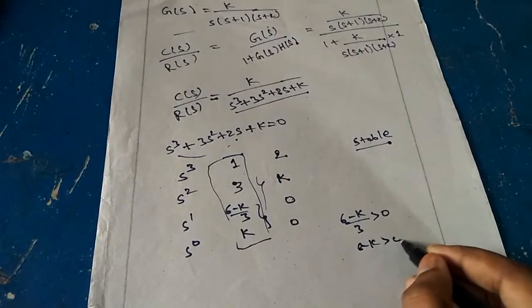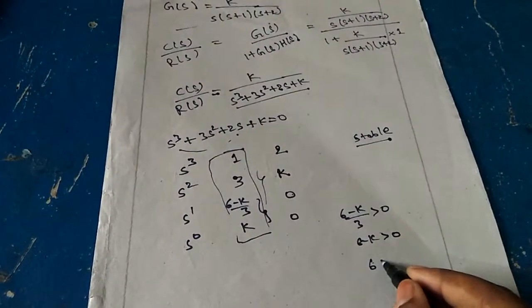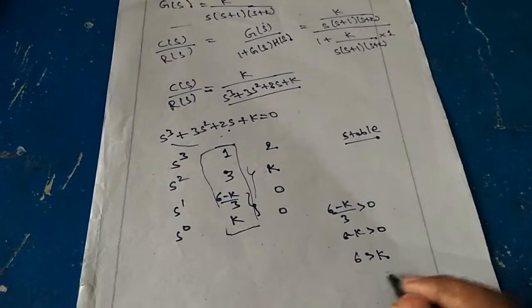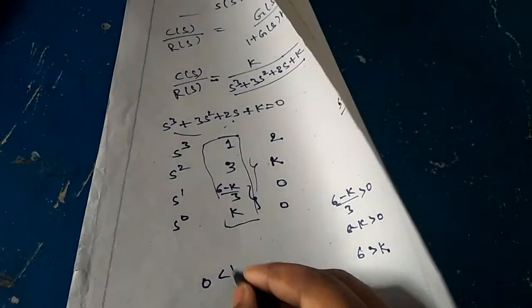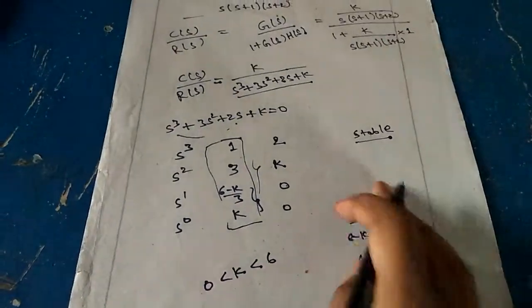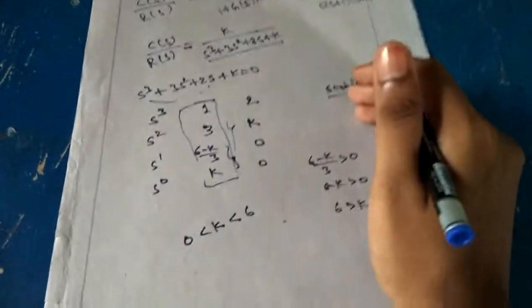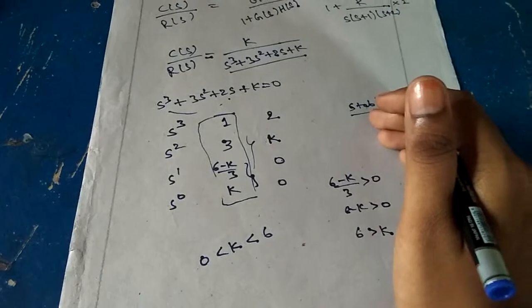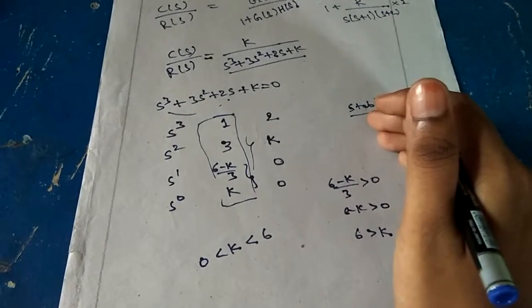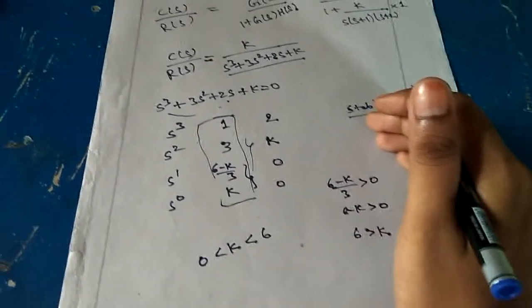Then 6-k is greater than 0, so 6 is greater than k. From this we can say that the range of k is 0 < k < 6. This is the range of k for which the system is said to be stable. This is the concept and method to find the range of k.